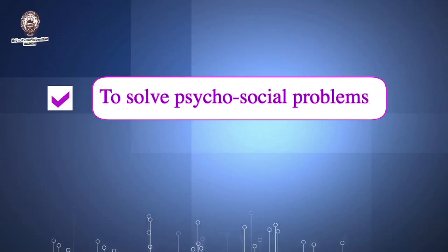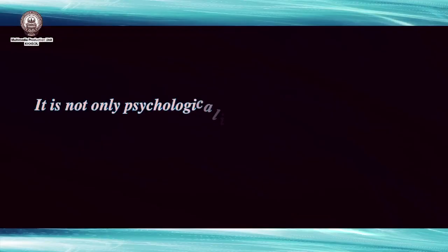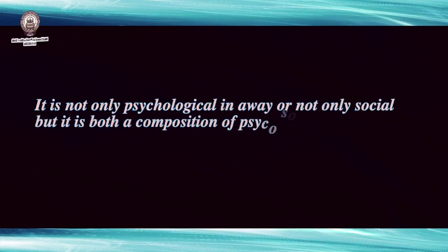Now let us see the objectives of social work. Objectives are statements or formulations of what we are trying to do in social work. Number one: to solve psychosocial problems. Psychosocial means an individual is a composition of not only his physical being but also of the mind. When a crisis is faced by an individual, it is not only psychological or social but a composition of psychosocial aspects. The objective of social work is to try to address the psychosocial problems that an individual faces.